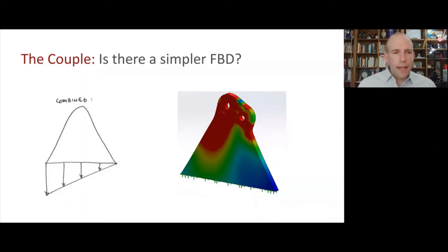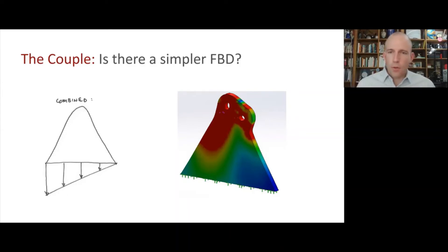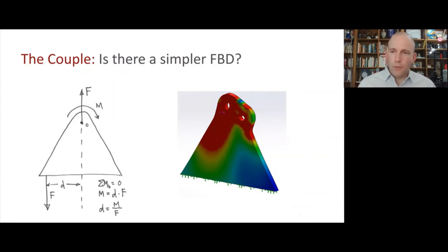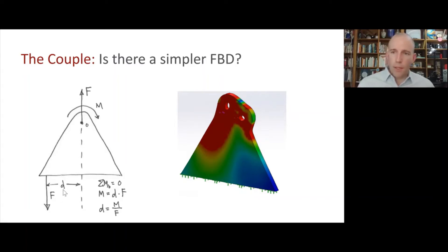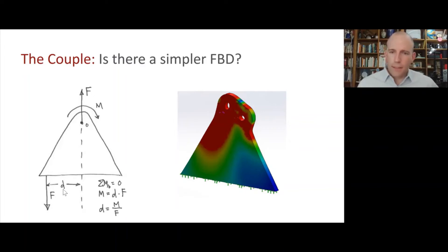The trick here is to recognize that for static equilibrium purposes, you don't need to know everything about the stress distribution. It's sufficient to know what the integral gives you for total force and where the center of pressure is. We get the equivalent statics result if we apply that force at the center of pressure. So a good free body diagram has these two forces for vertical force balance, but instead of applying a moment at the bottom, we offset this force so that F times D is the moment. For moment balance, M must equal F times D, meaning D equals M divided by F.